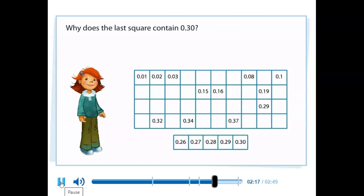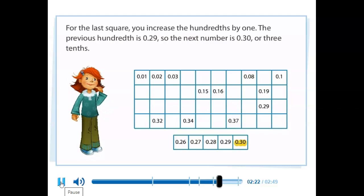Why does the last square contain thirty-hundredths? For the last square, you increase the hundredths by one. The previous hundredth is twenty-nine hundredths, so the next number is thirty-hundredths, or three-tenths.